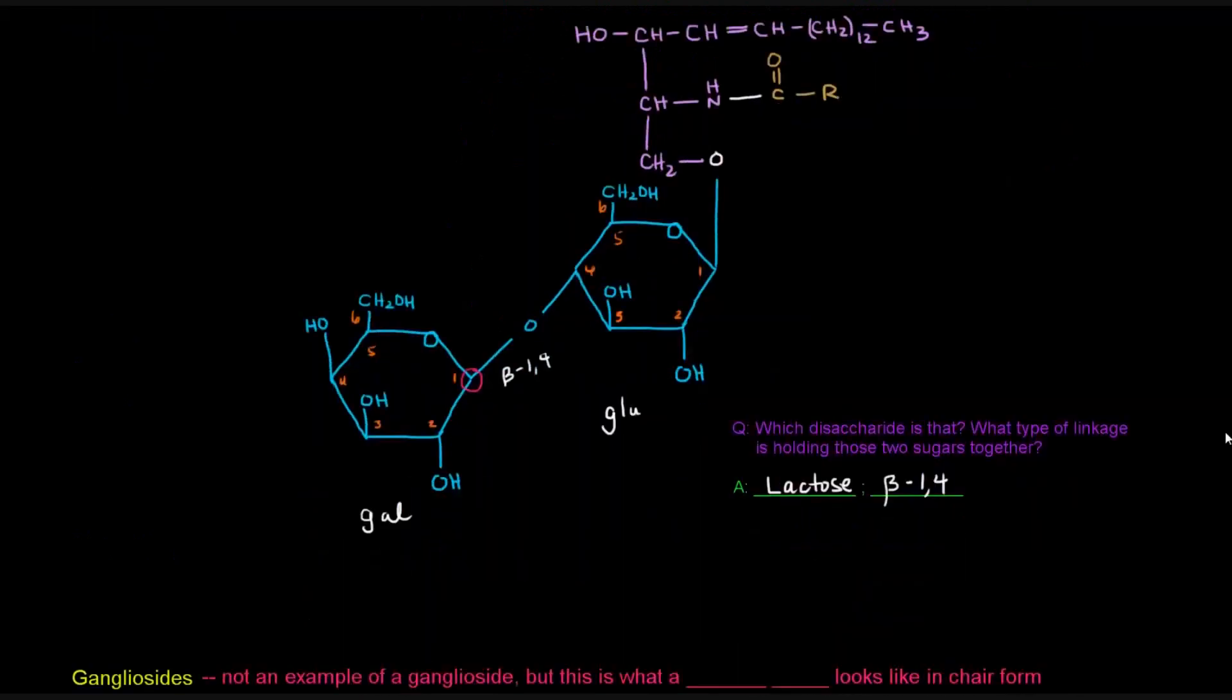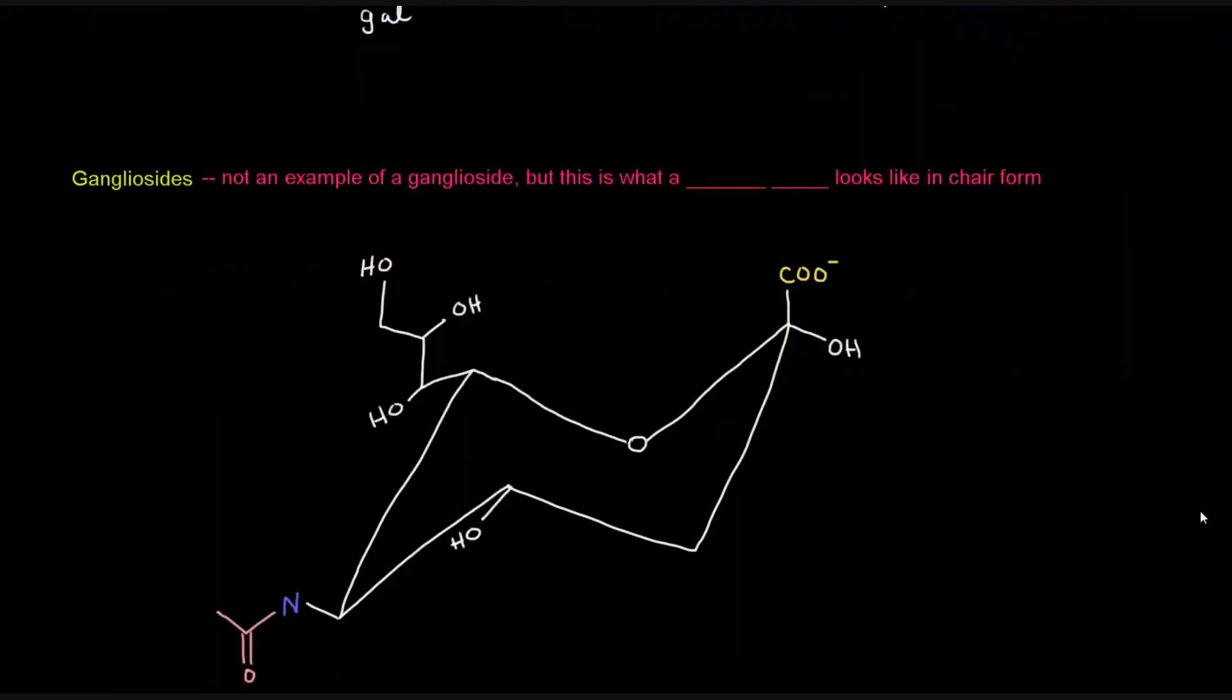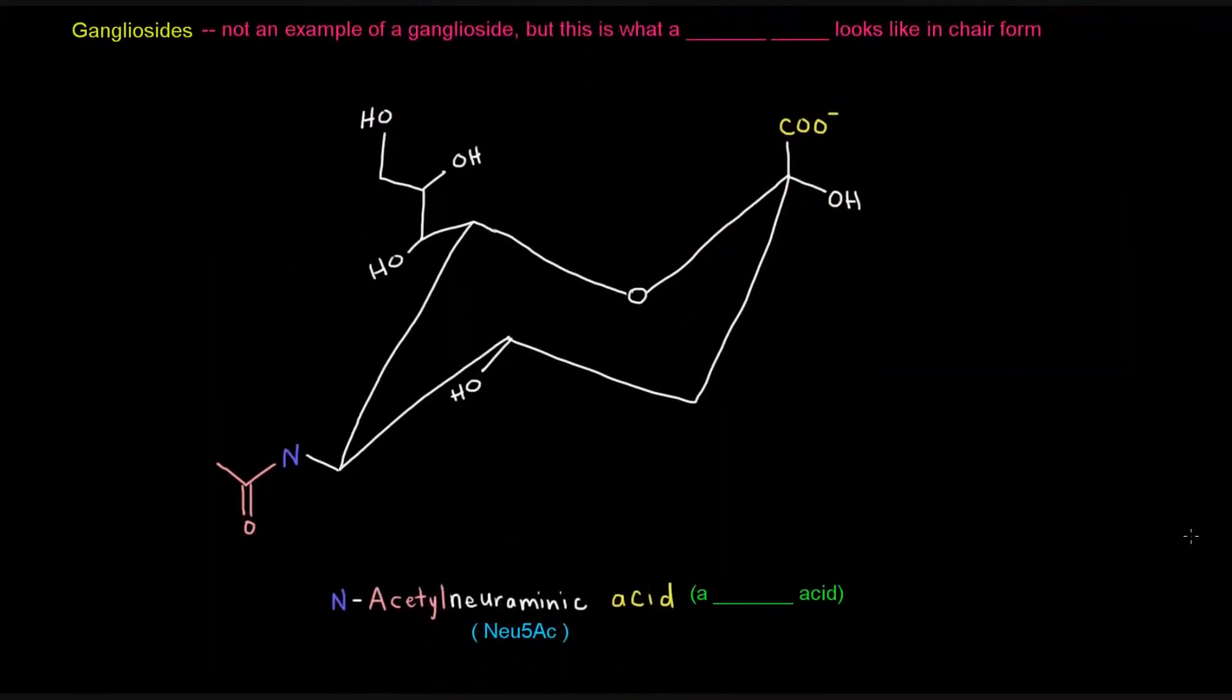And the last example for gangliosides, it's not an actual example of a ganglioside, but this is what a sialic acid looks like. Specifically in the chair form, so here I've drawn N-acetylneuraminic acid, and I've done my best to color code this. So this is a sialic acid here.